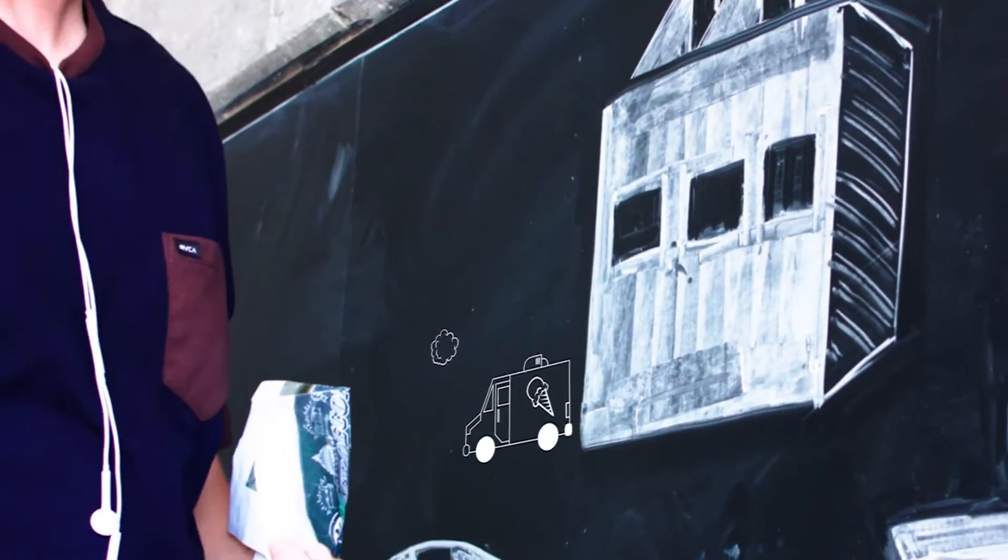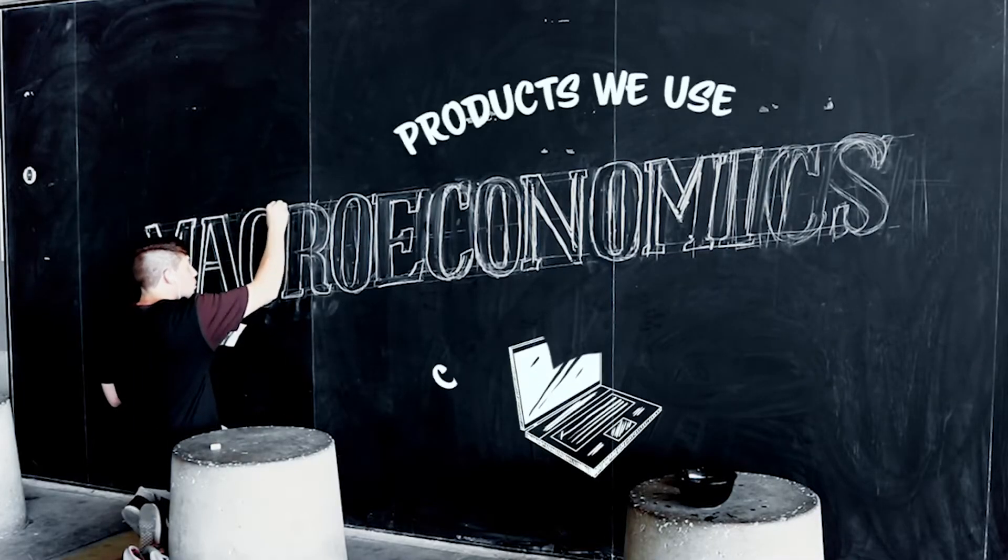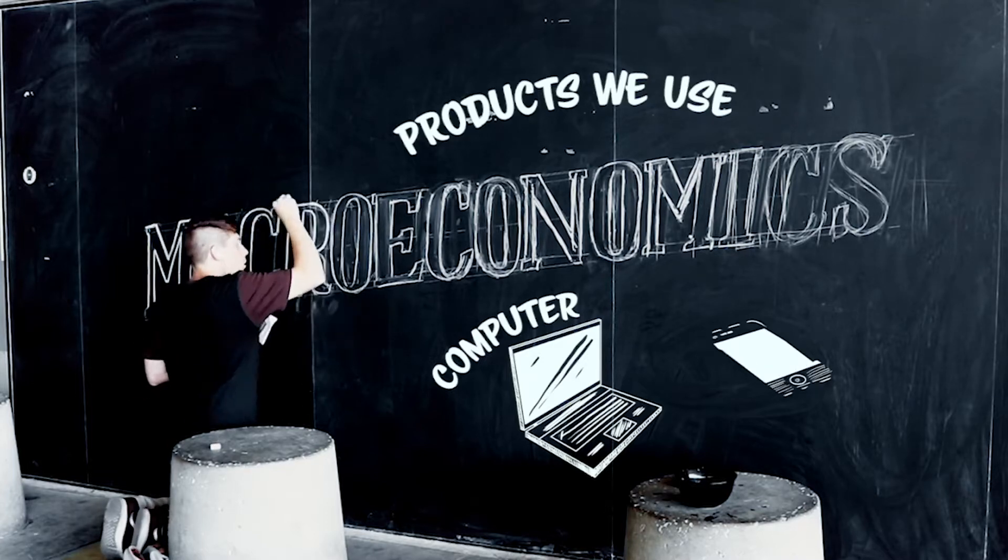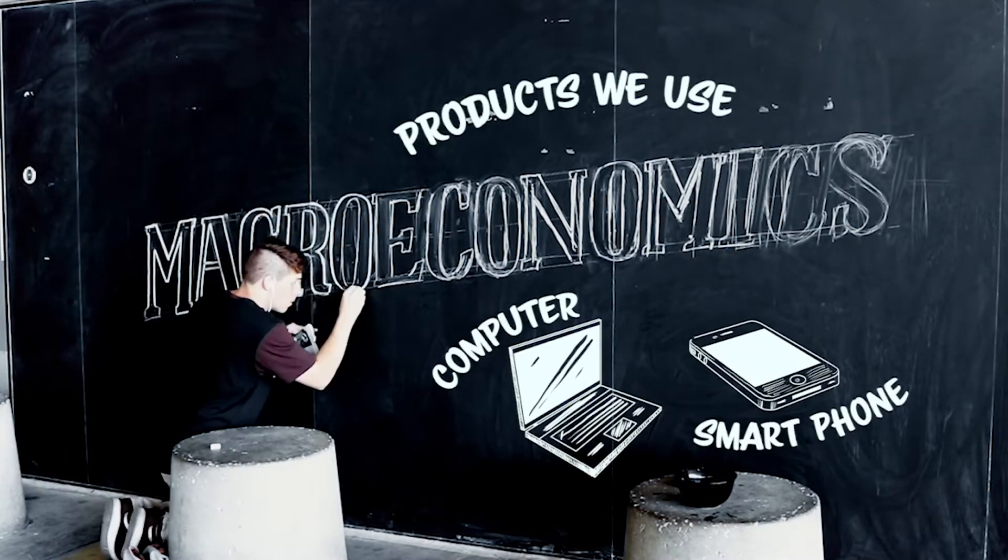Where do the things we buy and use on a daily basis come from? Take the product you are using right now. Perhaps a computer, tablet or a smartphone.